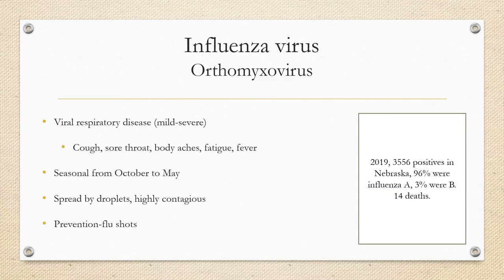In 2018, there were 40 million cases of influenza and 50,000 deaths. Influenza virus is an orthomyxovirus that causes viral respiratory disease ranging from mild to life-threatening. Symptoms include cough, sore throat, body aches, fatigue, and fever, seen seasonally from October to May. The main types are A and B, with a type C as well. It is transmitted by droplets and is highly contagious. The flu shot composition changes annually, and rapid influenza diagnostic tests are available for lab diagnosis.